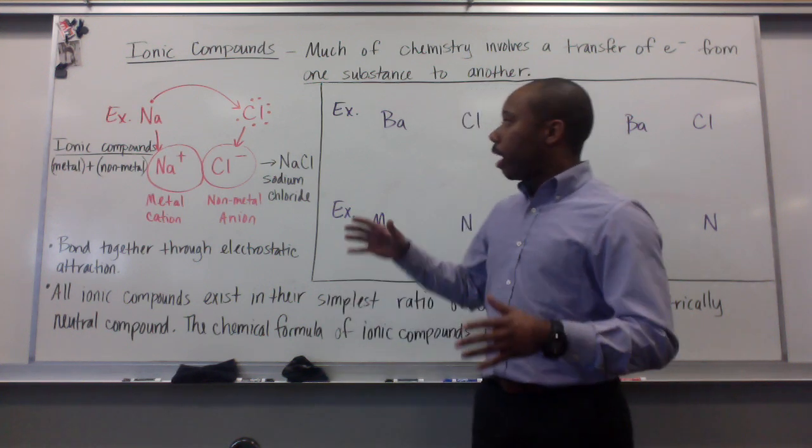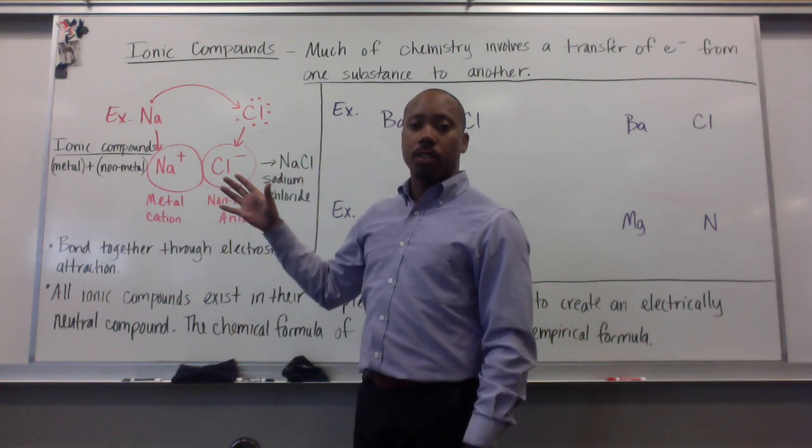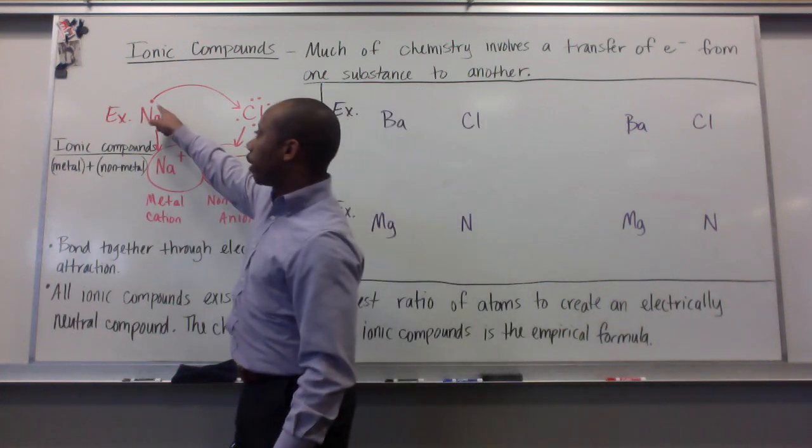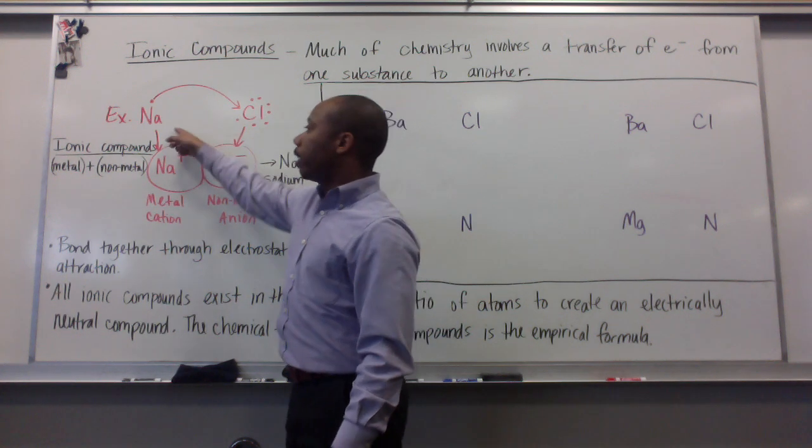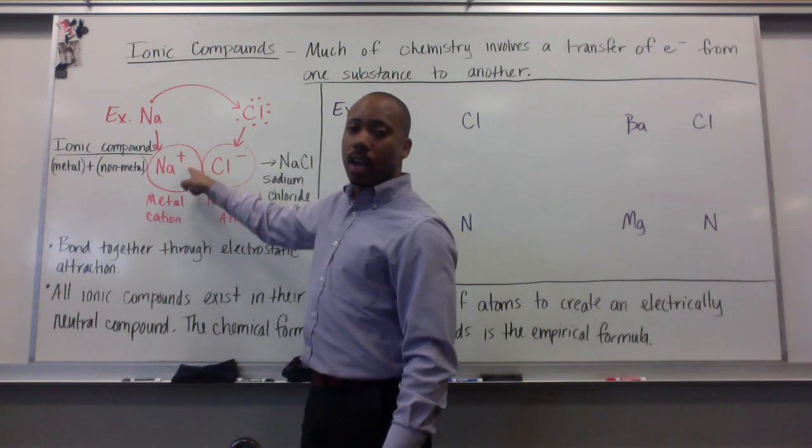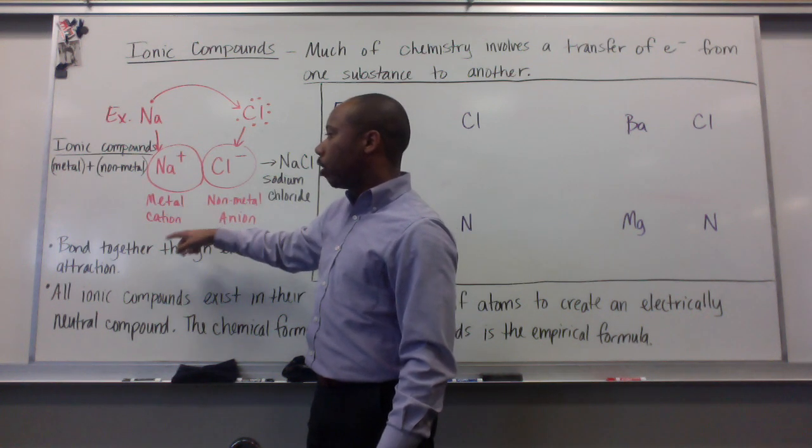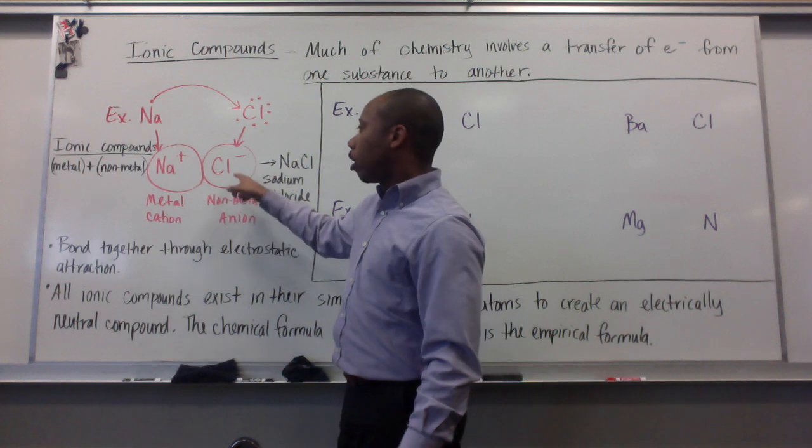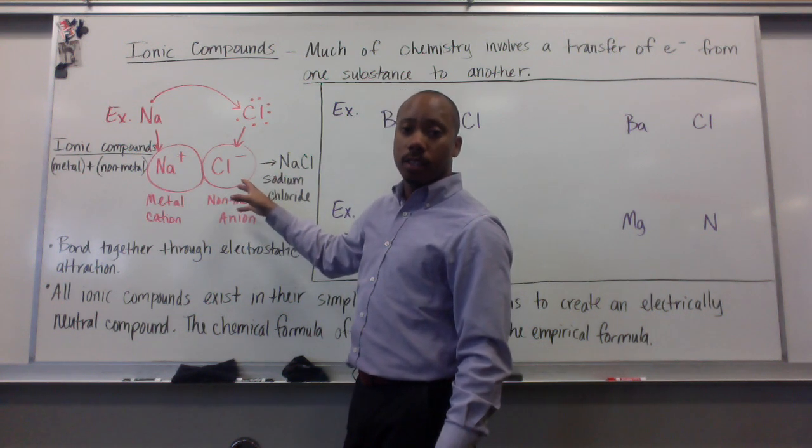Our first example is that happening between sodium and chlorine. Sodium has one valence electron, and it will transfer this electron to a chlorine atom that has seven valence electrons. This creates a Na+ ion and a Cl- ion. This is our metal cation called a sodium ion. This is our non-metal anion called a chloride ion.